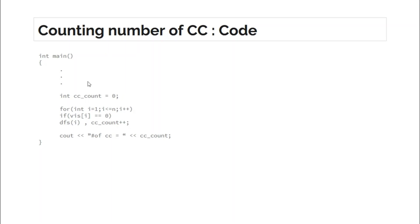Looking at the code: you declare the vector and take input. Initialize the connected component count to zero, then run a loop from 1 to N where N is the total number of nodes. Check whether the i-th node is visited. If it is not visited, the whole connected component containing that node is also not visited, so you make a DFS call to it and increment the component count. Since one DFS call visits the entire connected component, you will never make a DFS call to the same component more than once. After the loop completes, the count holds the total number of connected components.